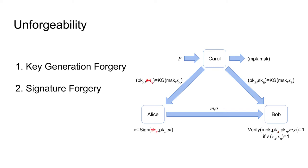In a signature forgery, an adversary is able to create a signature corresponding to Alice's public key without knowing her secret key. This type of attack is similar to the standard notion of unforgeability for a digital signature scheme. In the third and last type of forgery, an attribute forgery, a malicious Alice and a malicious Bob are able to jointly create a valid signature even though their attributes do not fulfill the policy.